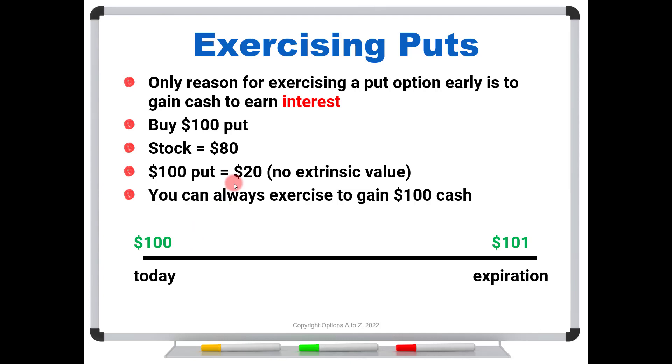So if you are even thinking of exercising a put option early, make sure you have very little extrinsic value, preferably none, and that you can earn some type of interest. And if not, it is definitely in your best interest to just hang on to the put and exercise it at expiration. Give that stock a chance to maybe come back to life. After all, it is a high volatility environment.